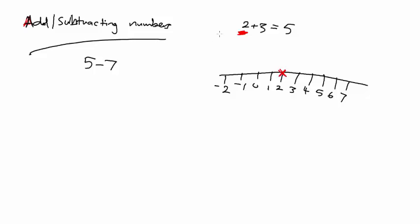This is where we start. Your first number - the two - is your starting point on the number line. By the way, just because there's no sign in front of the two, that means in reality there's a plus there. So two plus three is actually plus two plus three. The sign - your plus - tells you which direction you're going to move along the number line. Plus means go that way, to the right. And the last number is how many steps you move in that direction.